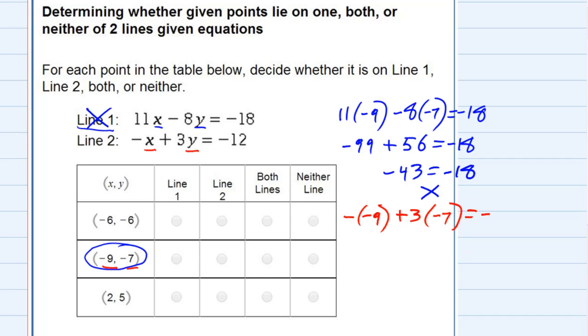And simplifying the left hand side, that would be a positive 9, plus negative 21, equals negative 12, and this time the left hand side simplifies to negative 12 equals negative 12, so yes, this point is on line 2.